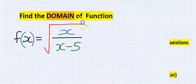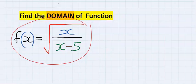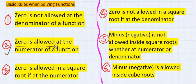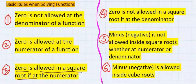To solve this function, let's consider some basic rules. Zero is not allowed at the denominator of a function, but zero is allowed at the numerator. Zero is allowed in a square root if it's at the numerator. Zero is not allowed in the square root at the denominator.